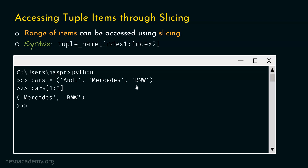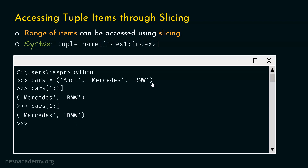There is one more way to access these two items. We can type cars[1:] — we can eliminate the end index because we want to access from index one up to the end. One colon means start from index one, access that item, and go up to the last item. If we hit enter, we get Mercedes and BMW. Now let's say we want to access the entire tuple. For this, we type cars[:] — just a colon within square brackets. This indicates we want to access all items. If we hit enter, we get the tuple with three items: Audi, Mercedes, and BMW.